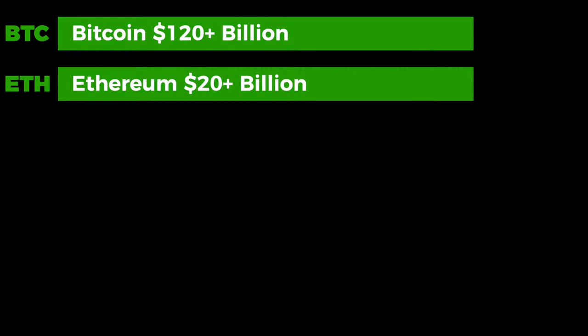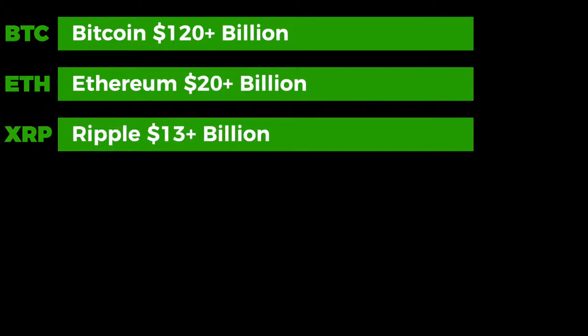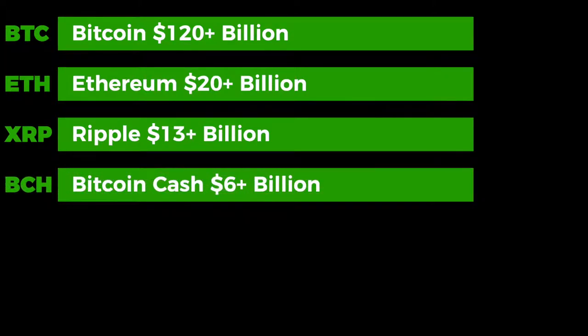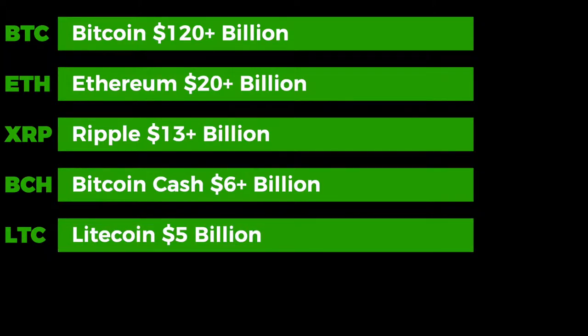The market cap for a cryptocurrency is the number of coins times the price per coin. Looking at the top five: Bitcoin's market cap is over 120 billion, Ethereum's is over 20 billion, Ripple's is over 13 billion, Bitcoin Cash's is over 6 billion, and Litecoin's is over 5 billion. Those were the calculations at the time this video was created — it changes daily based on fluctuations in cryptocurrency prices.